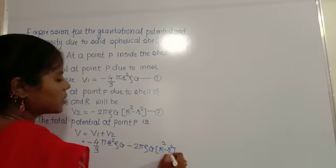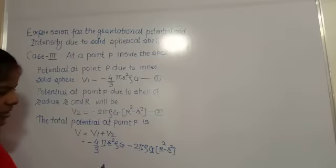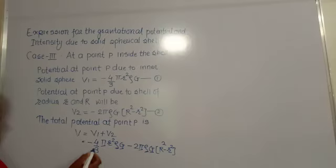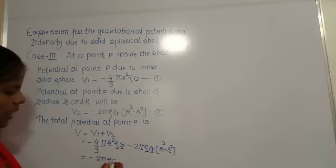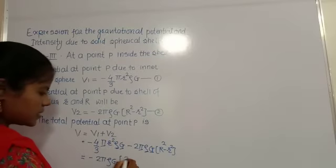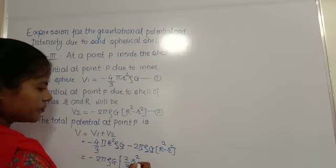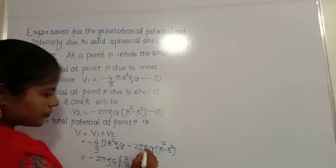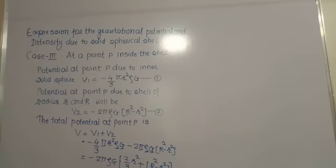From these two terms, we take common factors: π, G, and ρ are common. Taking −2πρG as the common factor outside, the remaining bracket becomes (2/3)r² + (R² − r²).